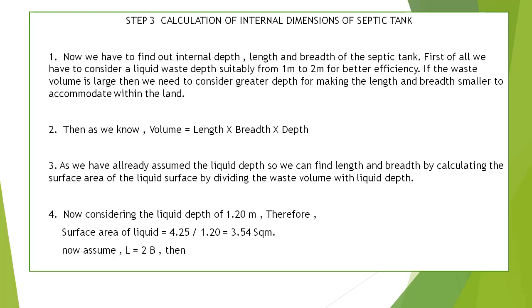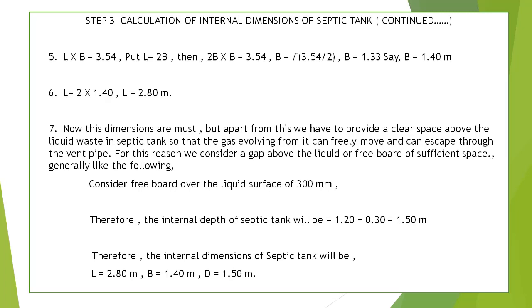Considering a liquid depth of 1.20 meters, surface area of liquid = 4.25 ÷ 1.20 = 3.54 square meters. Assuming length equals twice the breadth, then: length × breadth = 3.54, substituting length = 2 × breadth gives breadth = 1.33 meters, rounded to 1.40 meters. Therefore length = 2 × 1.40 = 2.80 meters.